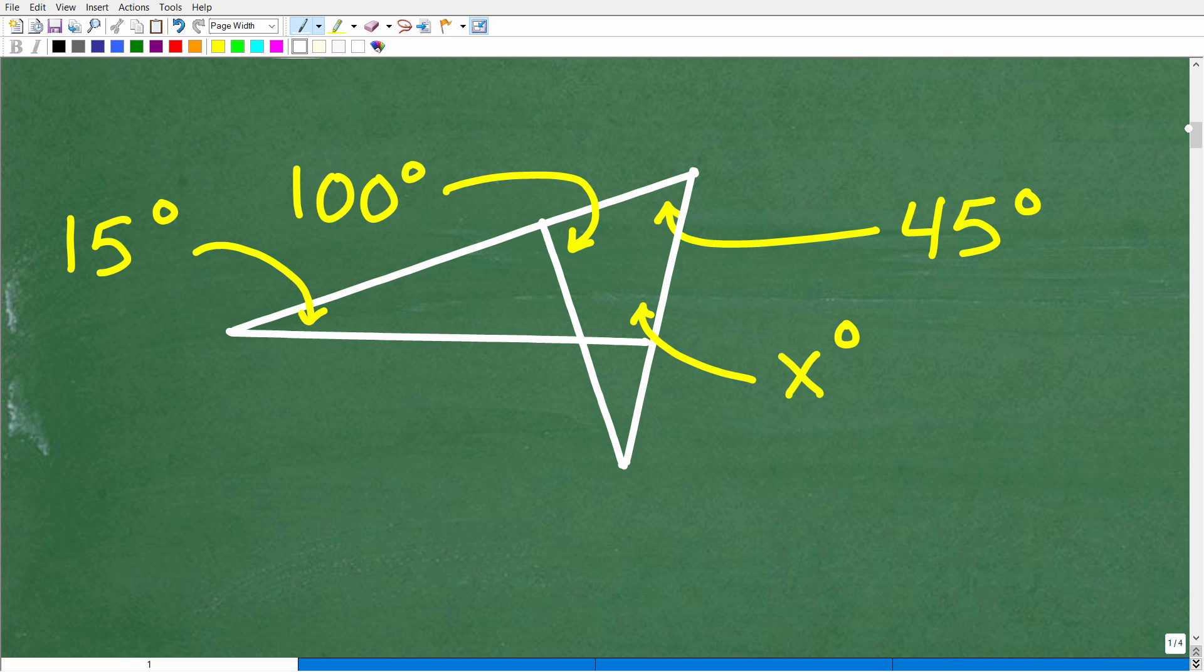All right, so here's the deal. Before we can do anything, let's just kind of recognize a couple of things. So we have two triangles, right? So we have this triangle in the problem, and we also have this triangle right there.